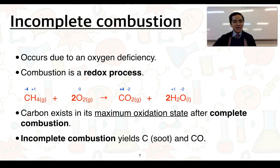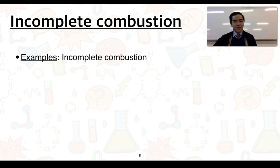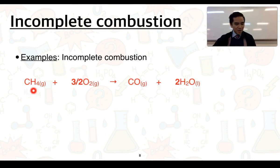Incomplete combustion on the other hand produces or yields carbon or soot and carbon monoxide. Examples of incomplete combustion can consist of methane reacting with oxygen to produce carbon monoxide and water. Just confirm that these equations are balanced. We could also see methane undergoing incomplete combustion to produce carbon in the form of soot as well as water.